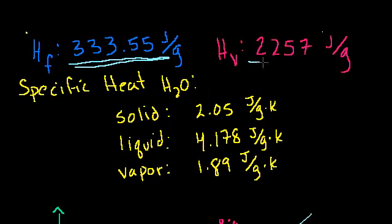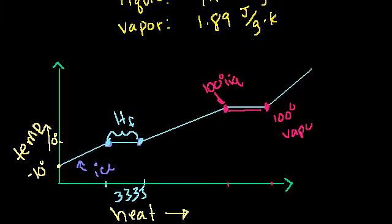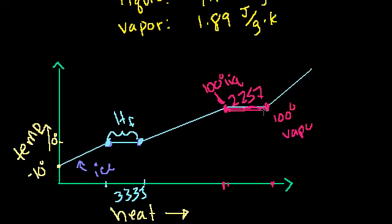Similarly, the heat of vaporization is 2,257 joules per gram. So if you have 1 gram of 100-degree liquid water and want to turn it into 1 gram of 100-degree water vapor — assuming constant pressure — you have to put 2,257 joules into the system. Conversely, if you have 100-degree vapor and want to condense it, you have to take that much energy out of the system.